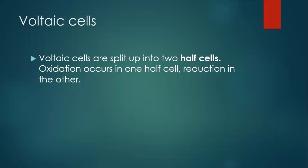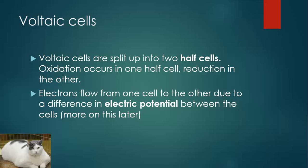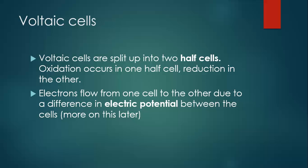Here's the idea with voltaic cells. Instead of having that reaction where we have the zinc strip inside of the copper solution, what you're doing is you are separating them — separating the two parts of the reaction into separate containers, into separate cells. And electrons are going to flow between those cells due to what we call an electric potential difference between them.